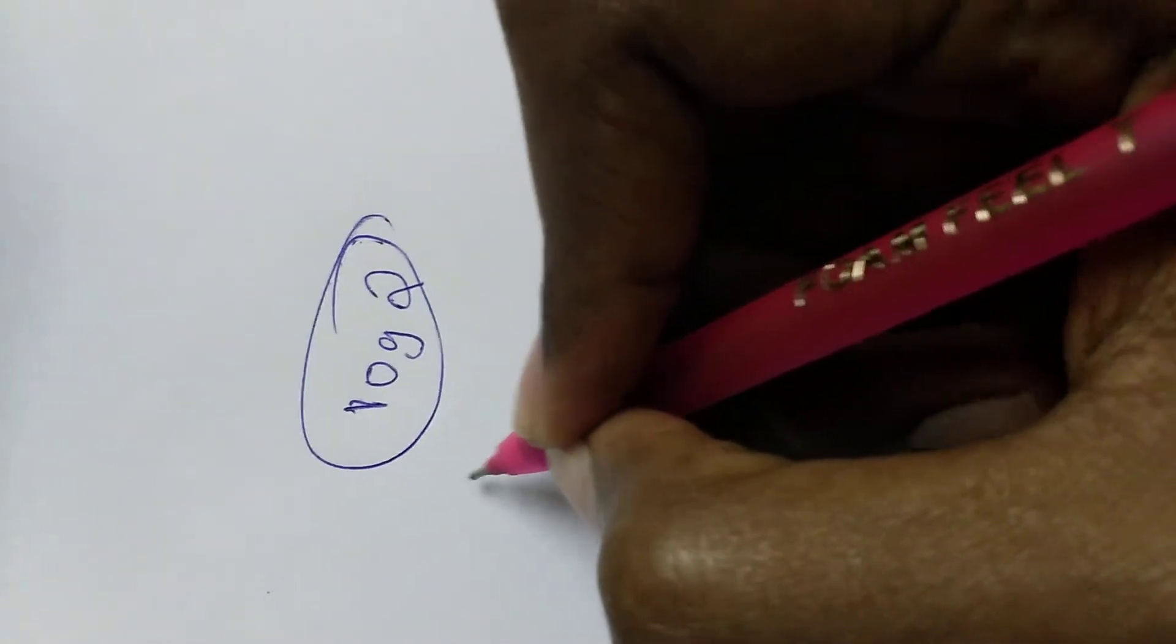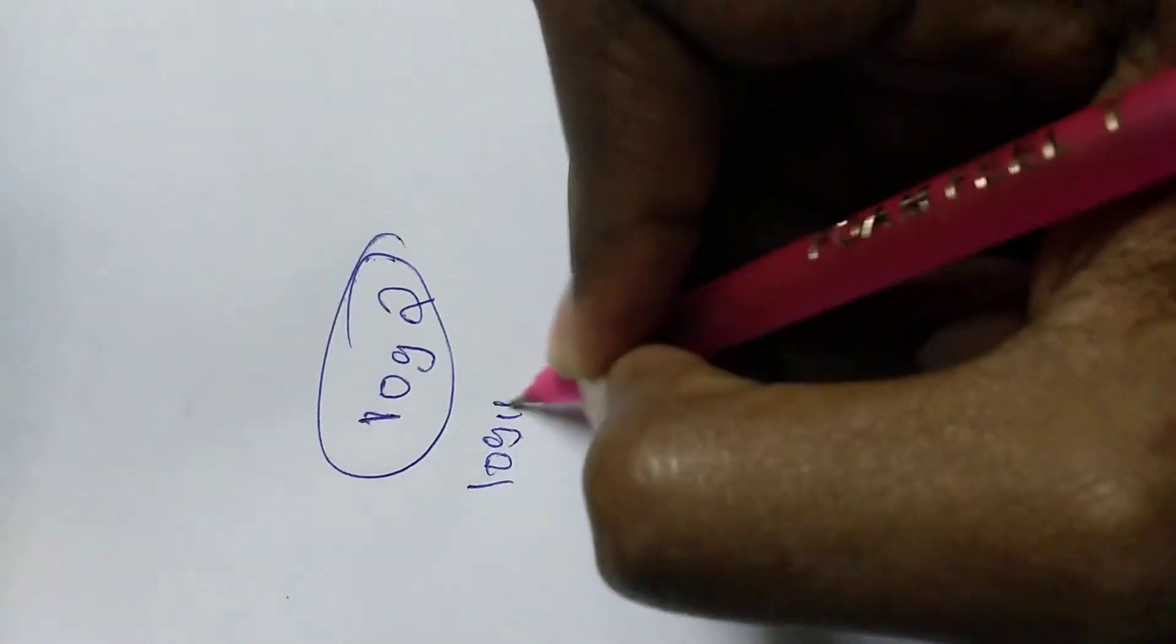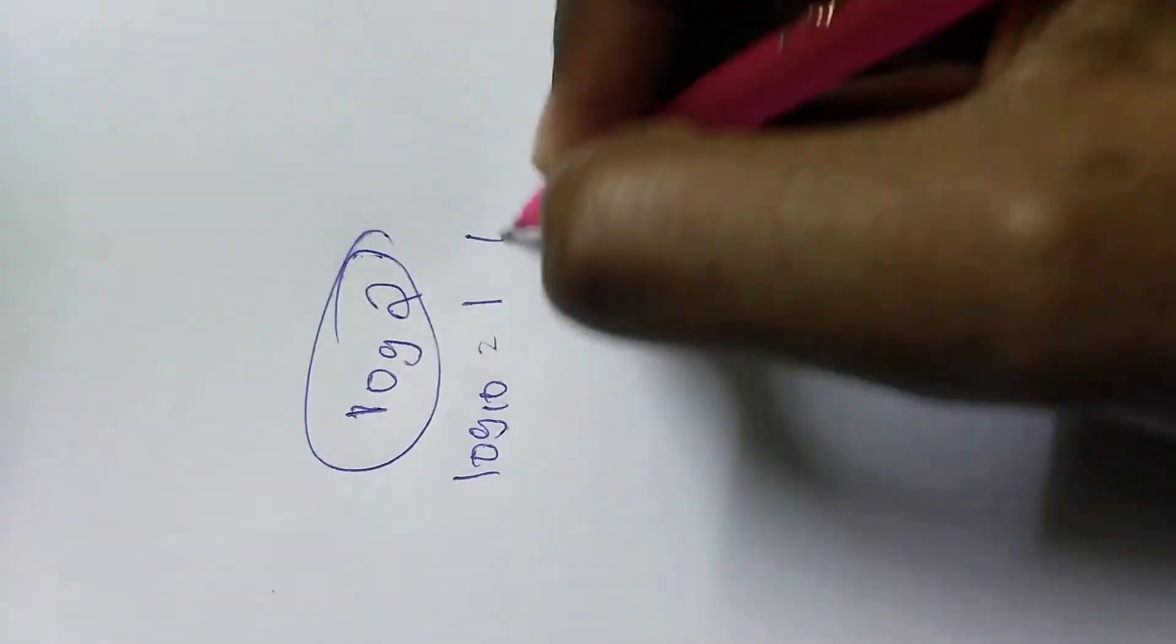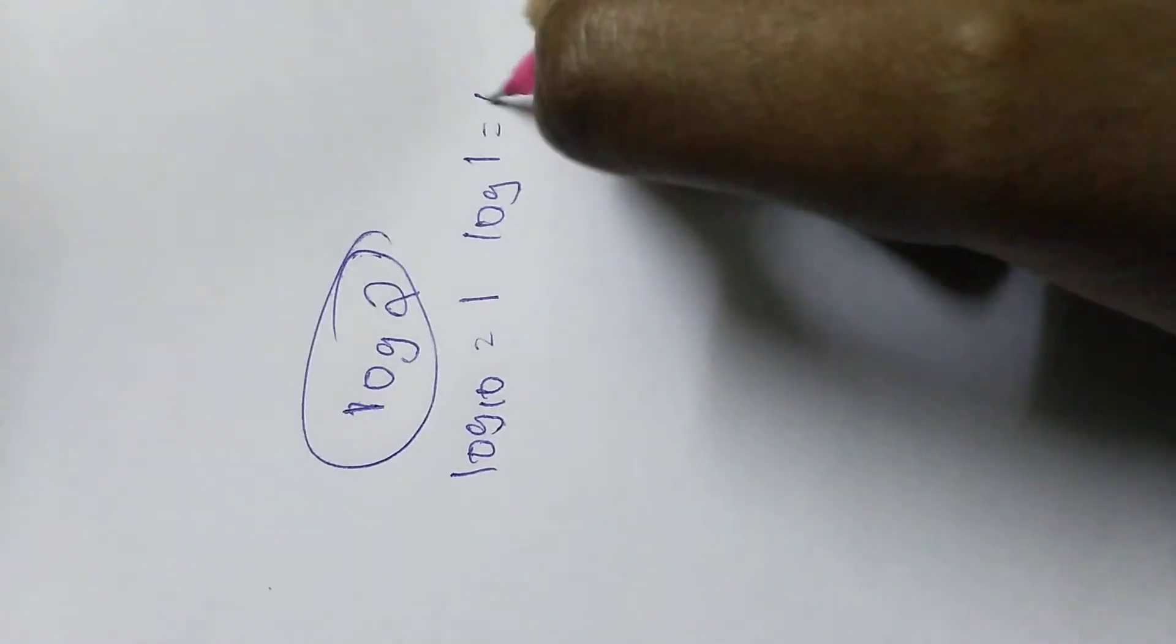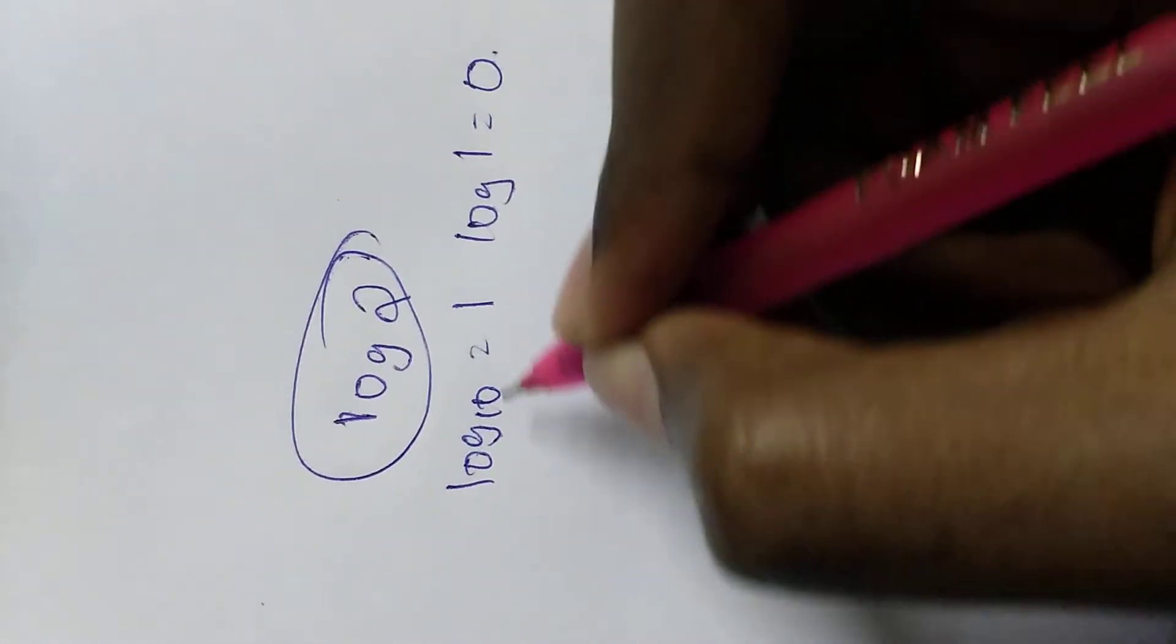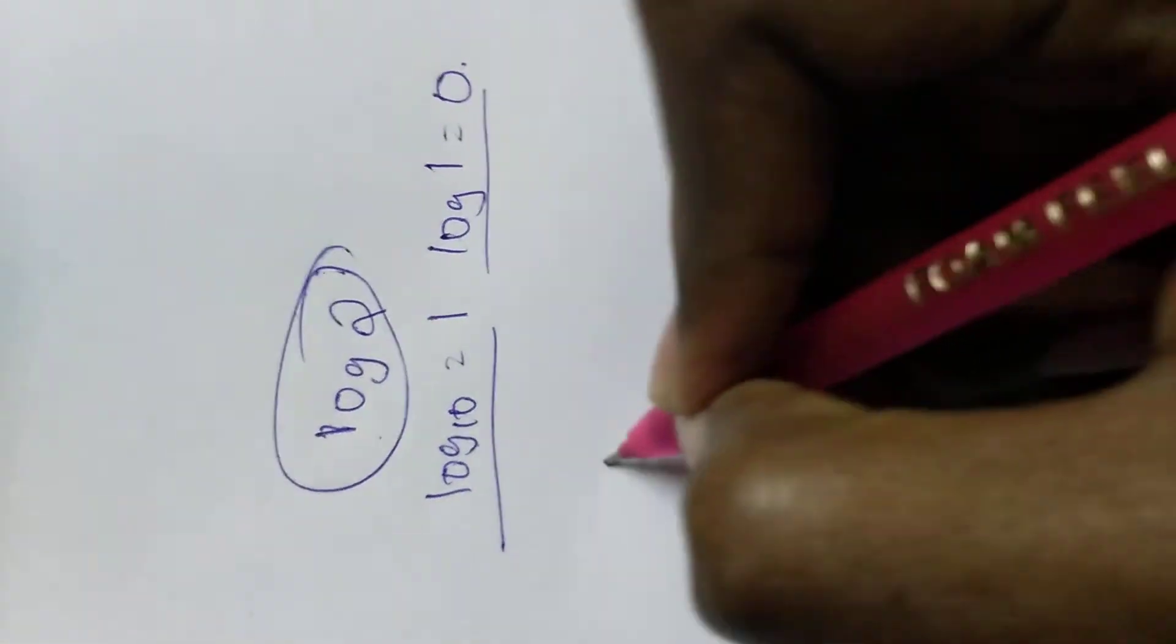So first you need to know basics of logarithms: log 10 value equals to 1, and log 1 value equals to 0. You need to learn these two basic things first. Next, log 2 we have to prove it as irrational.